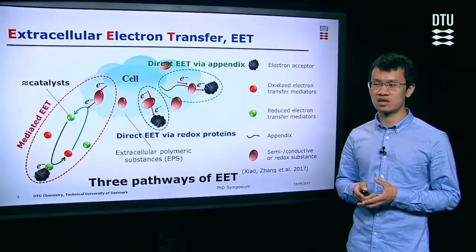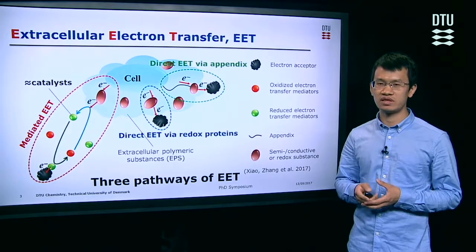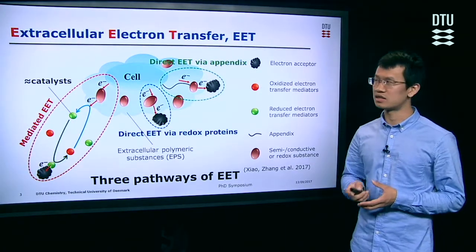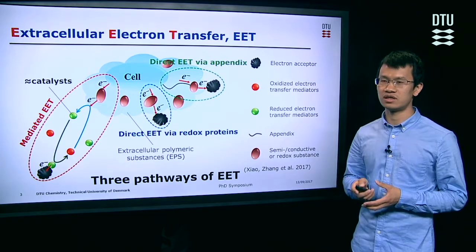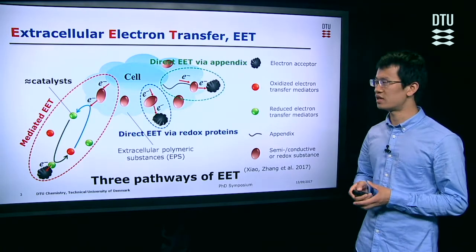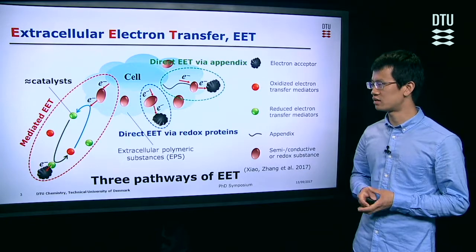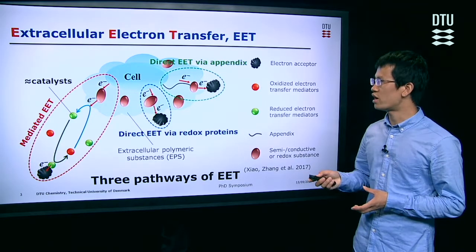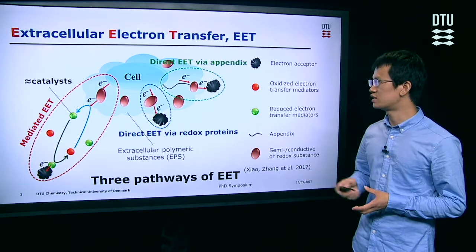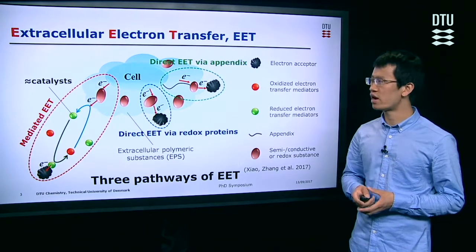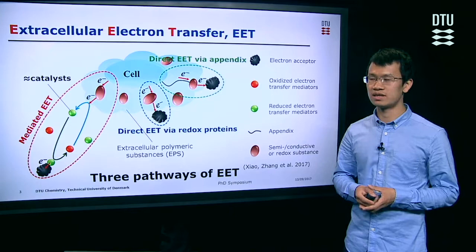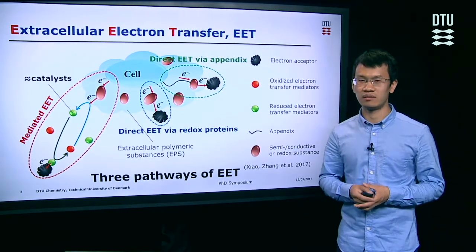The process by which bacteria exchange electrons with the environment is called extracellular electron transfer, EET. Researchers believe there are three ways to do that: the first is direct EET via redox proteins, the second is direct EET via appendages, and the last one is mediated EET.